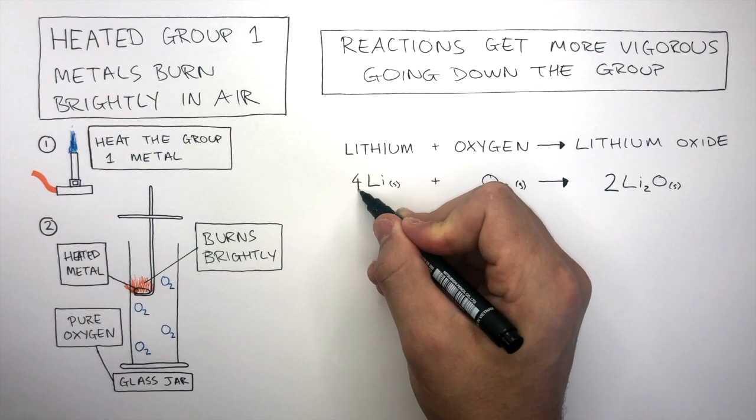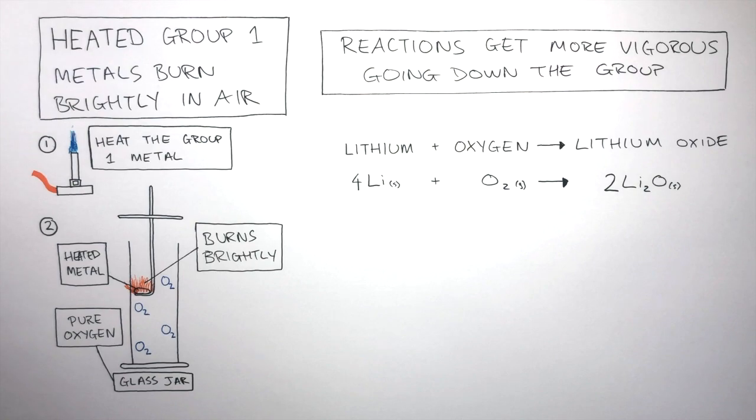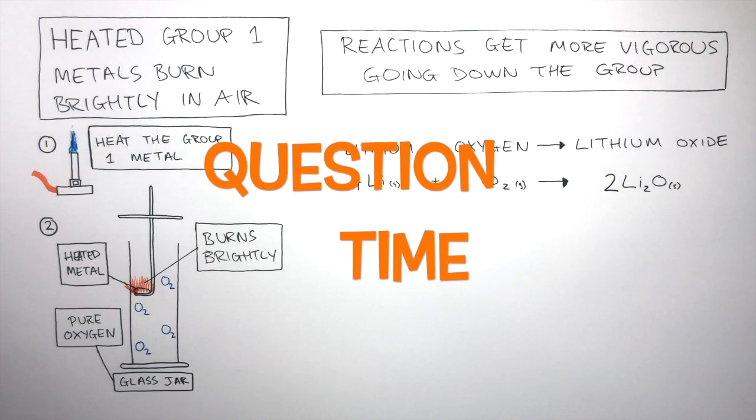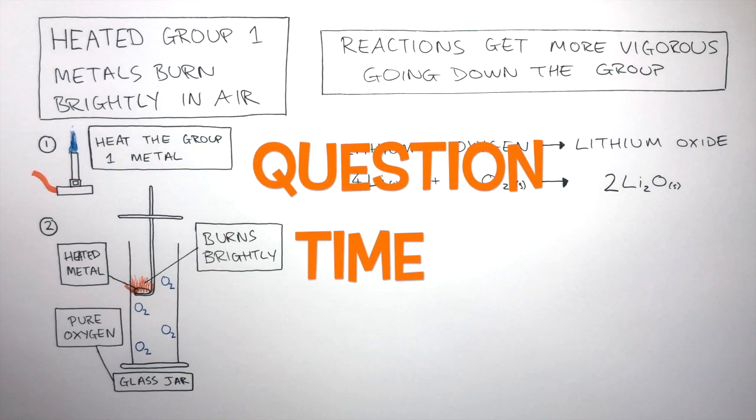2 times 2 means there are 4 lithiums on the right and there is only one lithium on the left. Therefore we need to put a big 4 in front of the lithium atom so there are now 4 lithiums on the left. This is now balanced. It's question time.